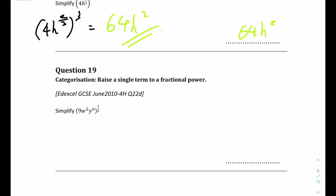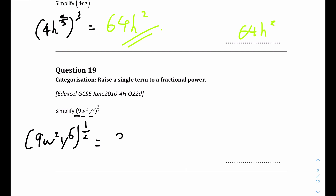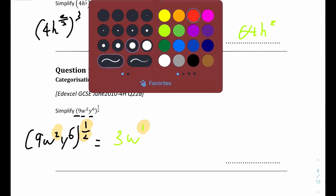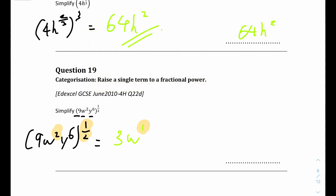Question 19: it's similar - we have 9w squared y to the power of 6, all to the power of one half. Apply the power to each term. The square root of 9 is 3. For w: 2 times one half equals 1, so it's just w. For y: 6 times one half equals 3, so it's y cubed. The final answer is 3wy cubed.